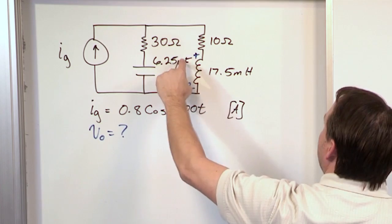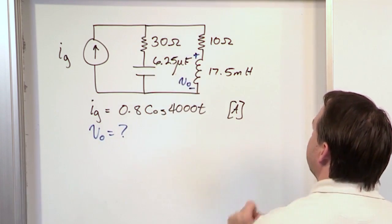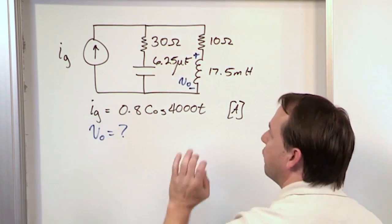And notice there's a voltage drop, I'm calling it V0, across the inductor. What we want to do is find the voltage drop across the inductor.